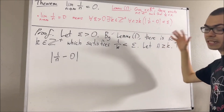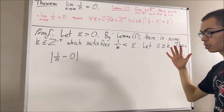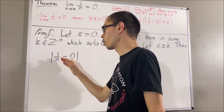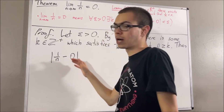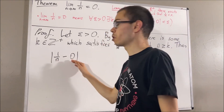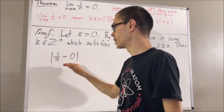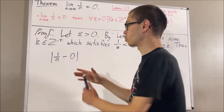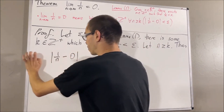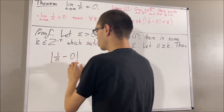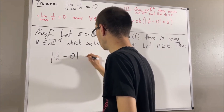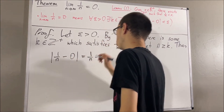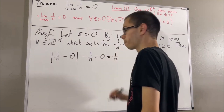Now let's work through this carefully. We know that n is a positive integer, and since n is positive, 1 over n is also positive. 1 over n minus 0 is positive. So the absolute value of a positive number means we can get rid of the absolute values. So this entire thing is just equal to 1 over n minus 0, which is of course equal to 1 over n.